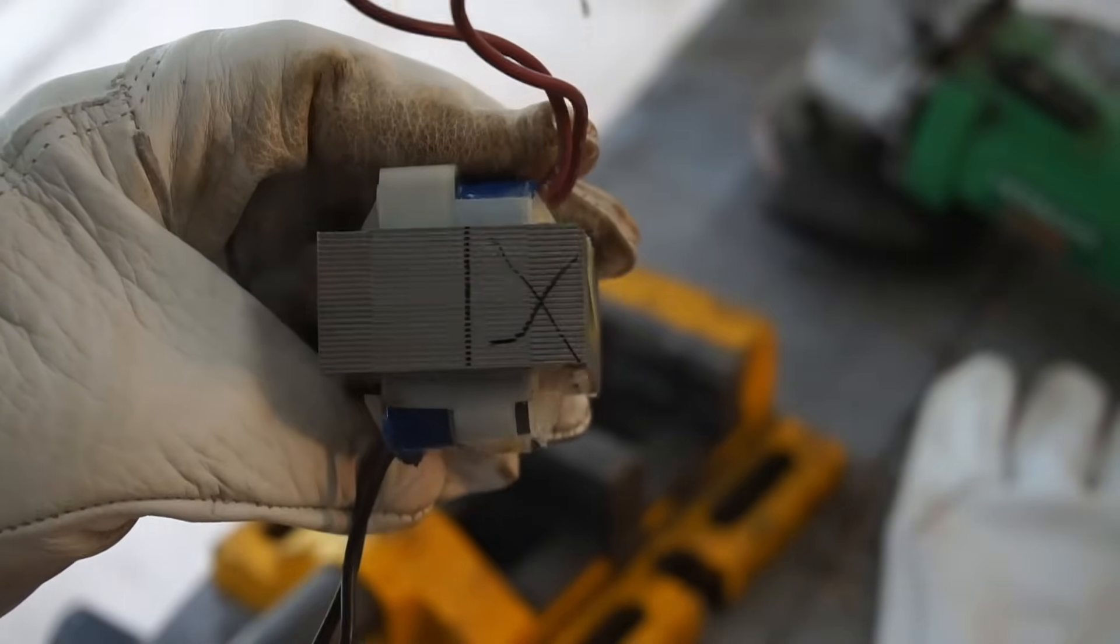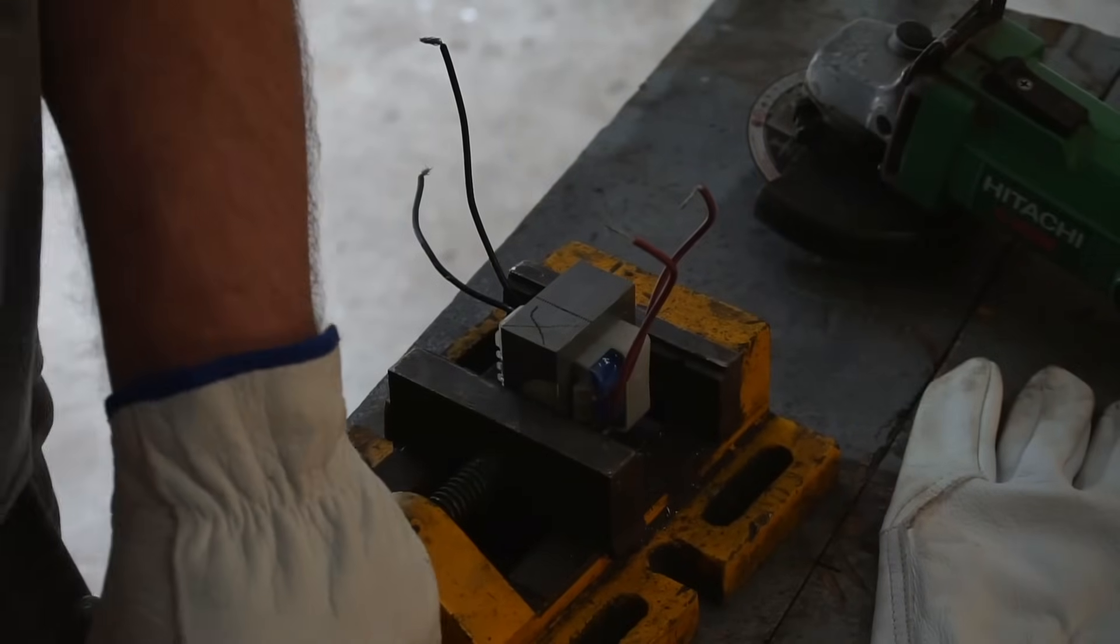So it's time to start modifying. I used a grinder to cut the bottom portion of the transformer's iron core off along with the other winding which we won't be using in this project.